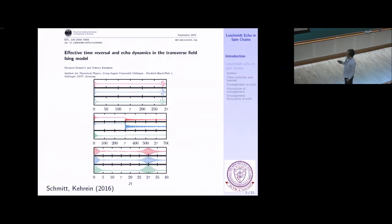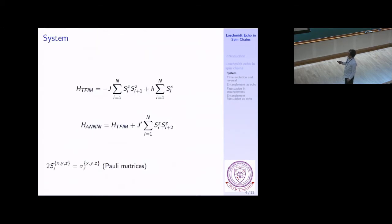where they were studying phenomena of time reversal and echo in the transverse field Ising model. This is an integrable system, and in the figure they have shown three different time reversal protocols. We will be focusing on the first one. The system we consider is the transverse Ising model in 1D, and you can also consider it with next nearest neighbor interaction, which in the literature is called the 'anisotropic' or 'any' model.